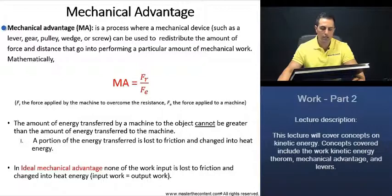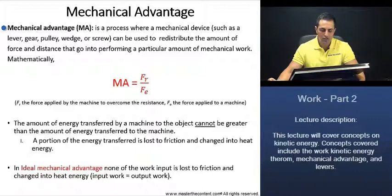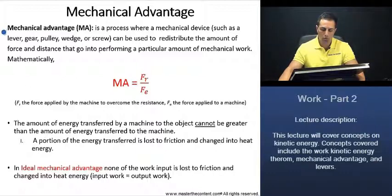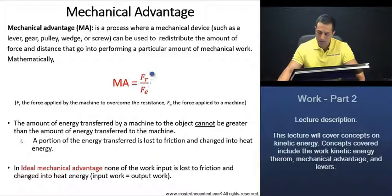Mechanical advantage. Let's begin here with a definition. Mechanical advantage is a process where a mechanical device such as a lever, gear, pulley, wedge, or screw can be used to redistribute the amount of force and distance that go into performing a particular amount of mechanical work. Mathematically, mechanical advantage is the force applied by the machine to overcome the resistance, divided by the effort force — the force applied to a machine.